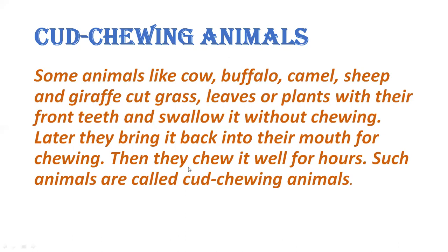Then they chew it well for hours — aur kaafi time tak usko chew karte hai. Such animals are called cud-chewing animals. To inhe hum kis naam se jaante hai? Cud-chewing animal. Some animals like cow, buffalo, camel, sheep and giraffe cut grass, leaves or plants with their front teeth, and swallow it without chewing. Later they bring it back and chew it well. This process is called cud-chewing.